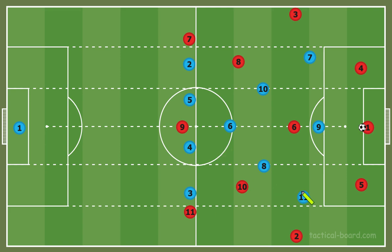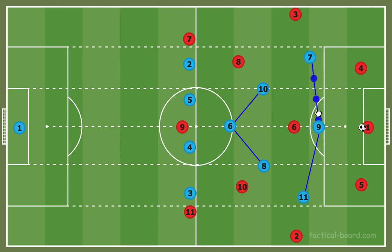First we're going to look at the 4-3-3, because that's something more people have experience with and it's been pretty common over the past couple of years — really gone into favor, especially with Liverpool using it very successfully with a single pivot. We see our front three, and I divide the field with an extra division down the center just to make horizontal distances easily measured. This helps make it more realistic and show you the distances most accurate to a game situation — so we have the front three and the back four.